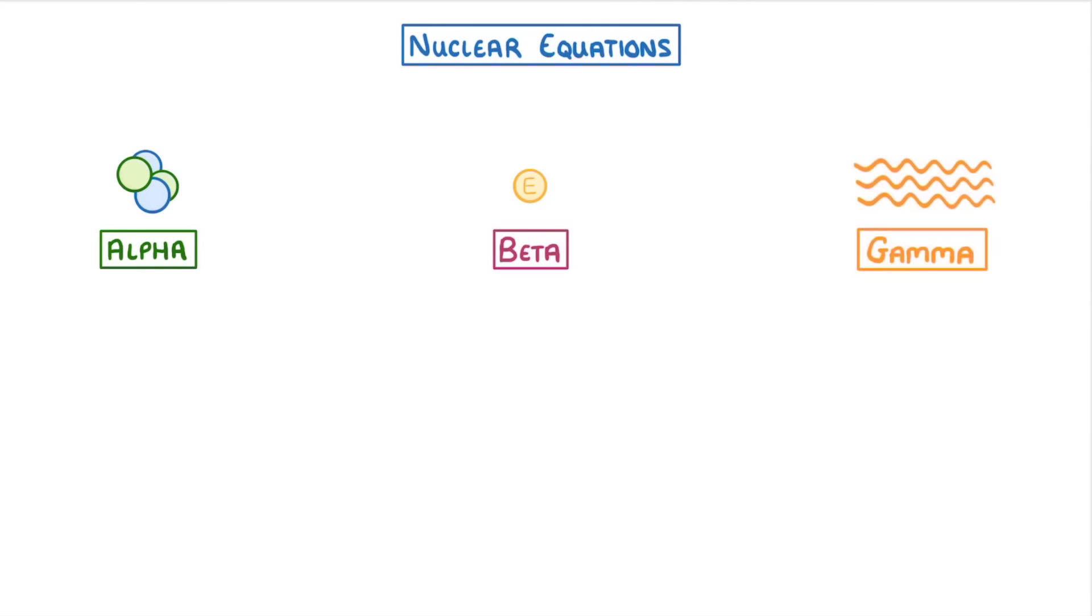As alpha particles consist of two protons and two neutrons, like the nucleus of a helium atom, we generally represent them like this, as helium-4-2, although you might sometimes see them as the Greek letter alpha instead.